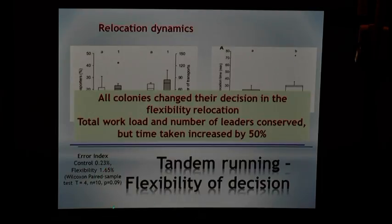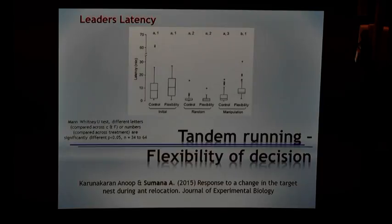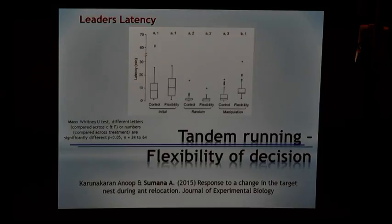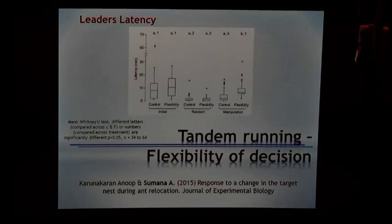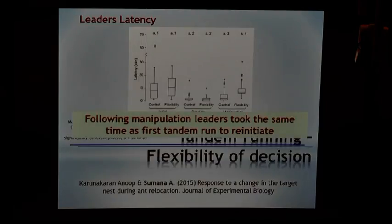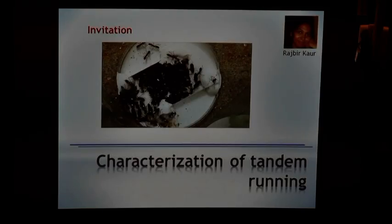There are hardly any wrong walks done by the leaders — they're changing their destination without making errors. The only cost they pay is 50% extra time. In order to account for this, we looked at the latency of leaders — the time taken between one tandem run and the next. In the flexibility experiment, leaders took the same amount of time to reassess the entire arena as they did on their first tandem run. Because of this reassessment, they were successfully able to recruit to the correct site in all cases, and all colonies successfully reached their destination.